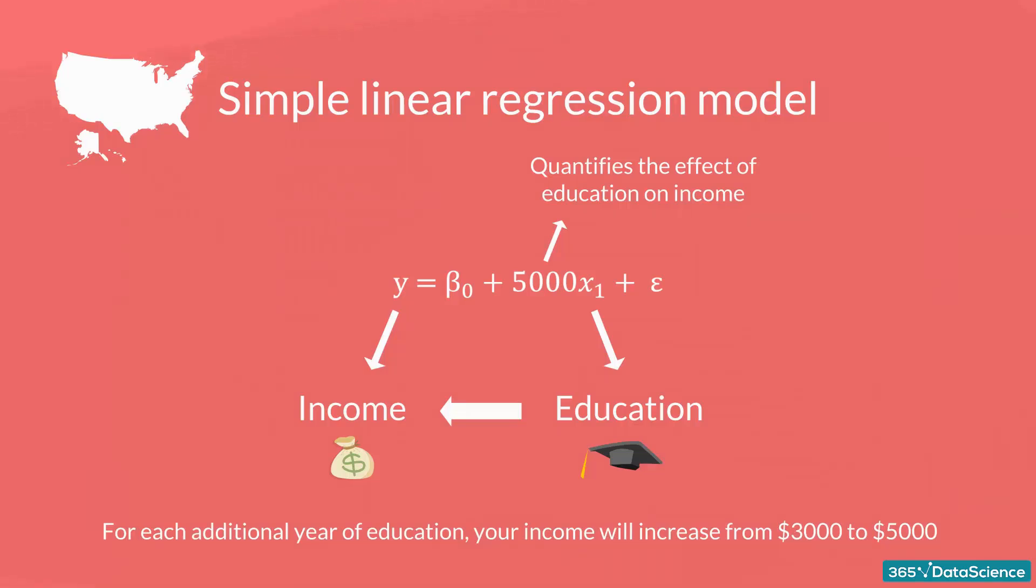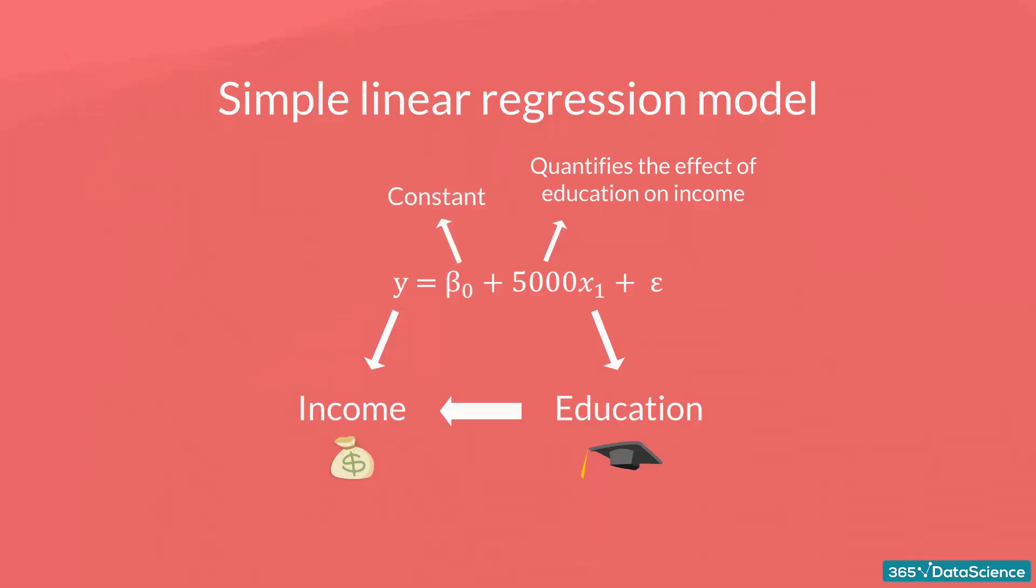The other two components are the constant beta 0 and the error, epsilon. In this example, you can think of the constant beta 0 as the minimum wage. No matter your education, if you have a job, you will get the minimum wage. This is a guaranteed amount.